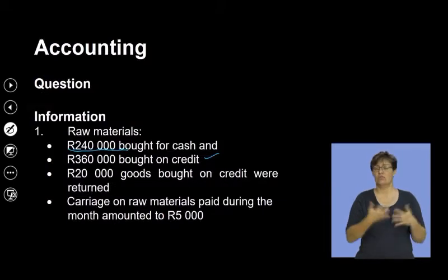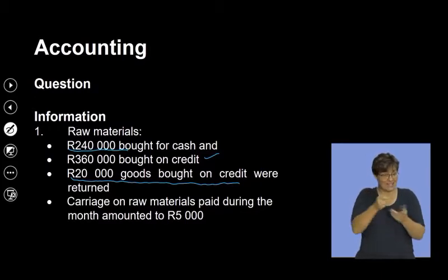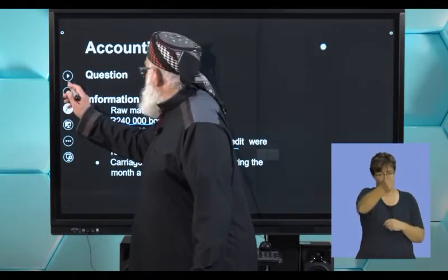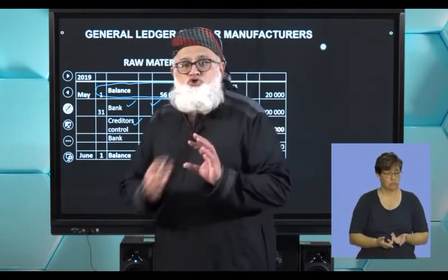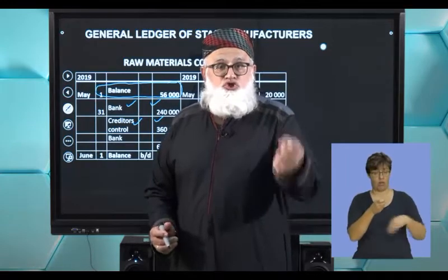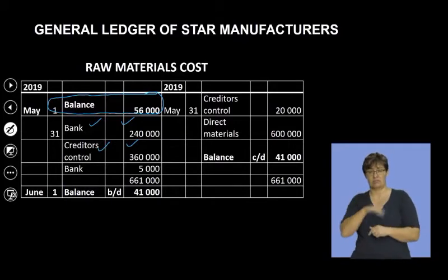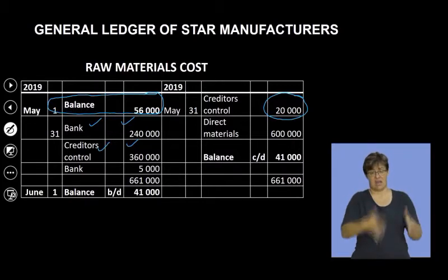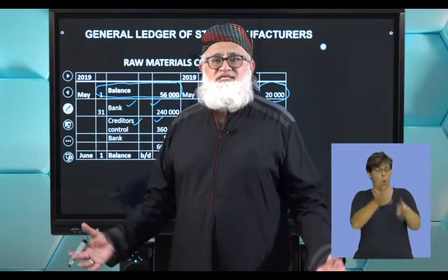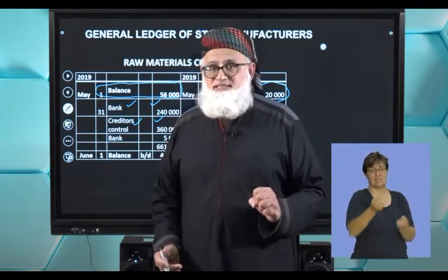Going back to the information: 20,000 rand worth of goods bought on credit were returned to our creditors. The contra entry is a debit to creditors control — to reduce your liability — and a credit to my raw materials cost account. You can see this represents the return of material to my suppliers, whether defective, incorrect, or for whatever reason. These raw materials were returned to our suppliers.